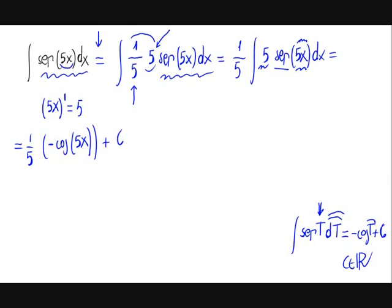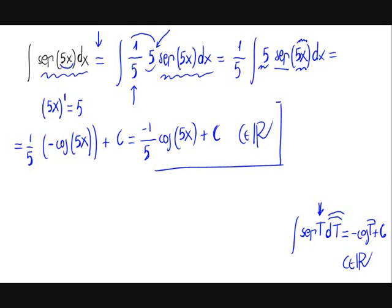To finish, we have 1 fifth times the cosine of 5x, plus c, where c is from the set of real numbers. That would be the result of the indefinite integral we were asked to solve.